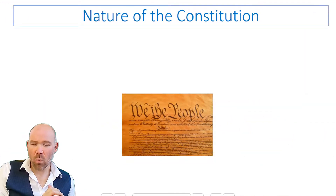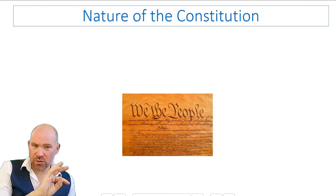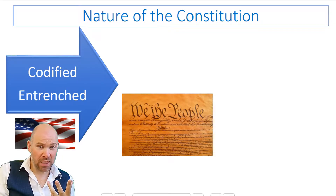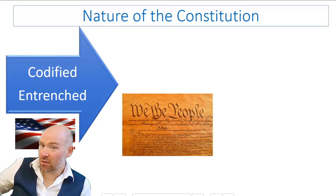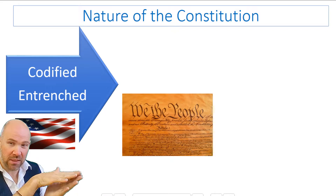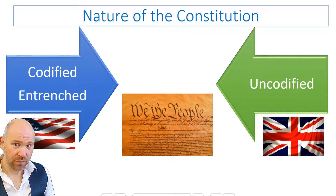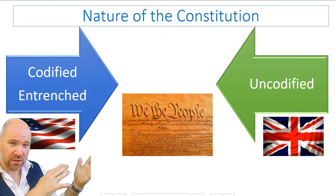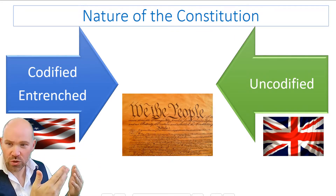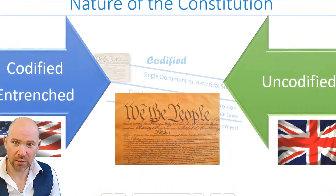Now we know a bit about how and why the UK Constitution has changed over time, we can start to put some keywords to different constitutions. Most constitutions around the world in modern countries — and I'm not including the UK as a modern country here because it started a long time ago — most of those constitutions are codified and entrenched. The American one is. Those are two different words but they're very closely linked. The UK Constitution, by contrast, is uncodified — and when talking about the nature of the UK Constitution, you need to use these words.